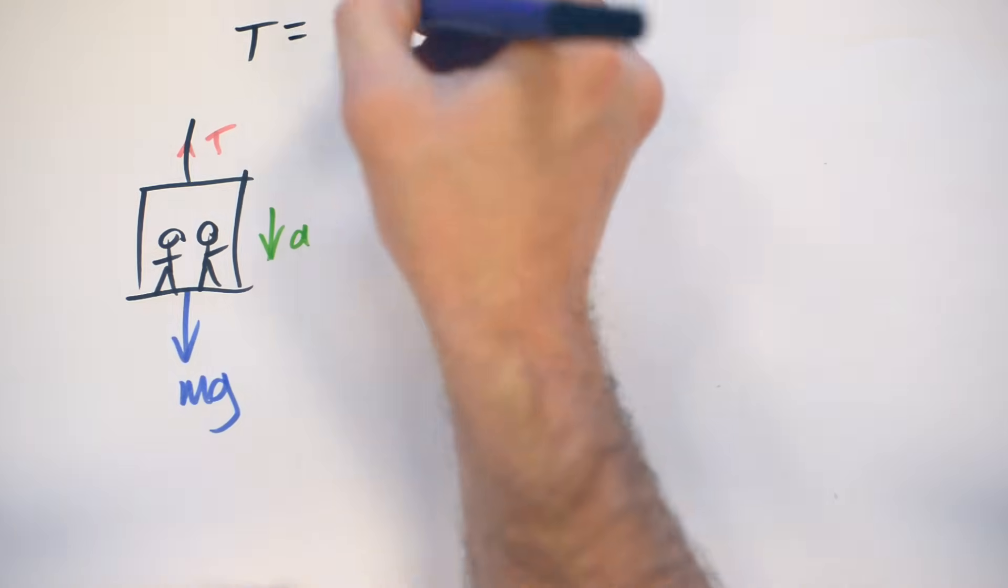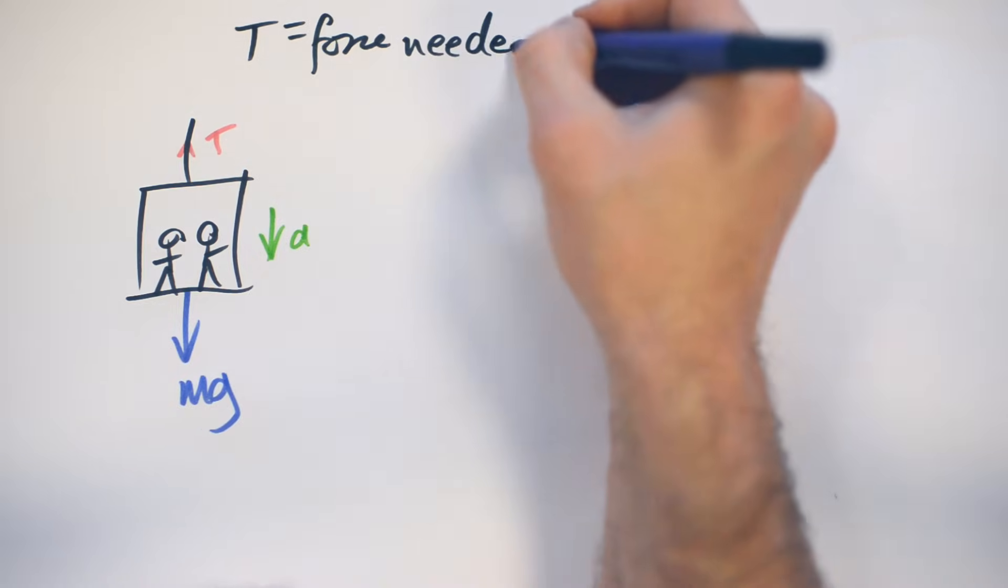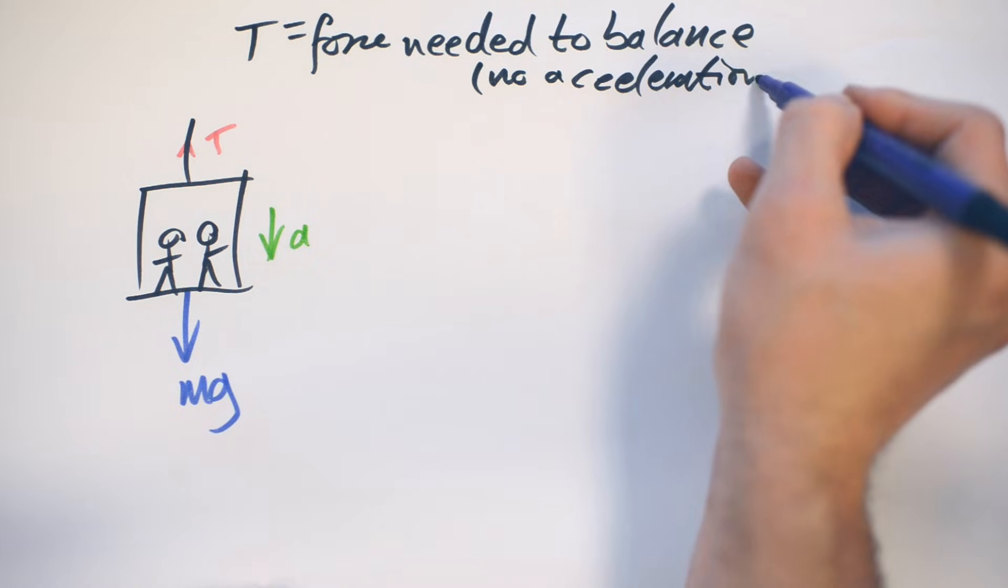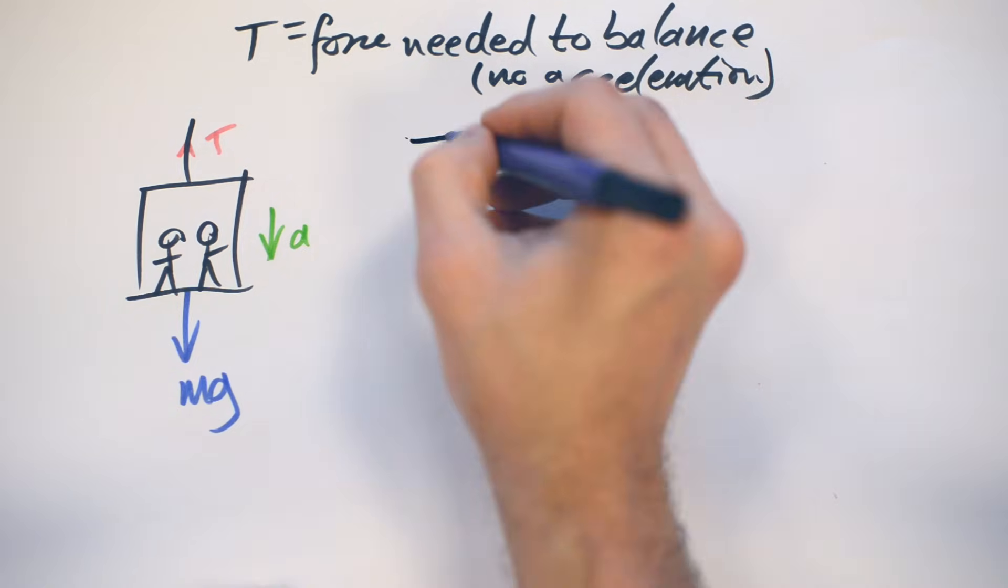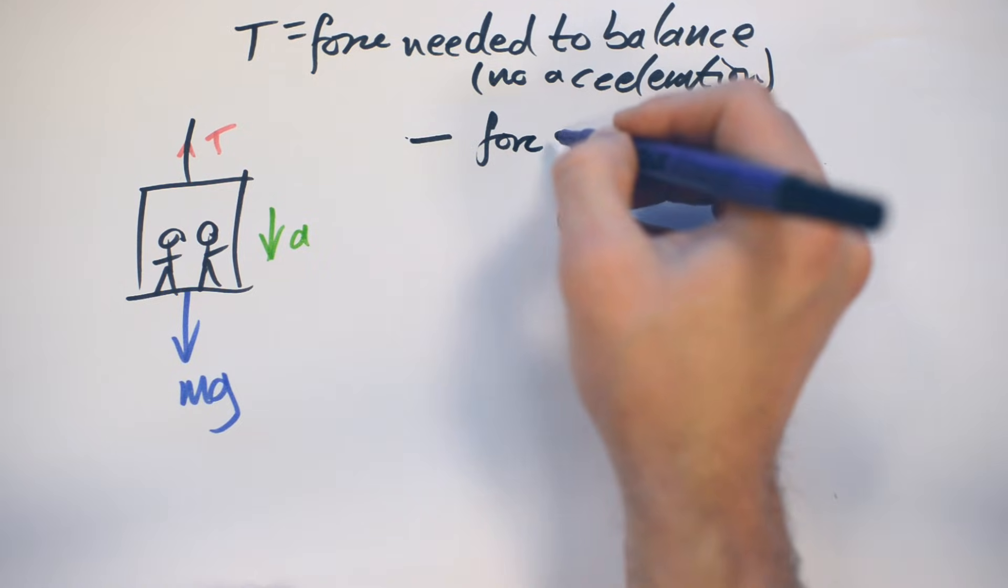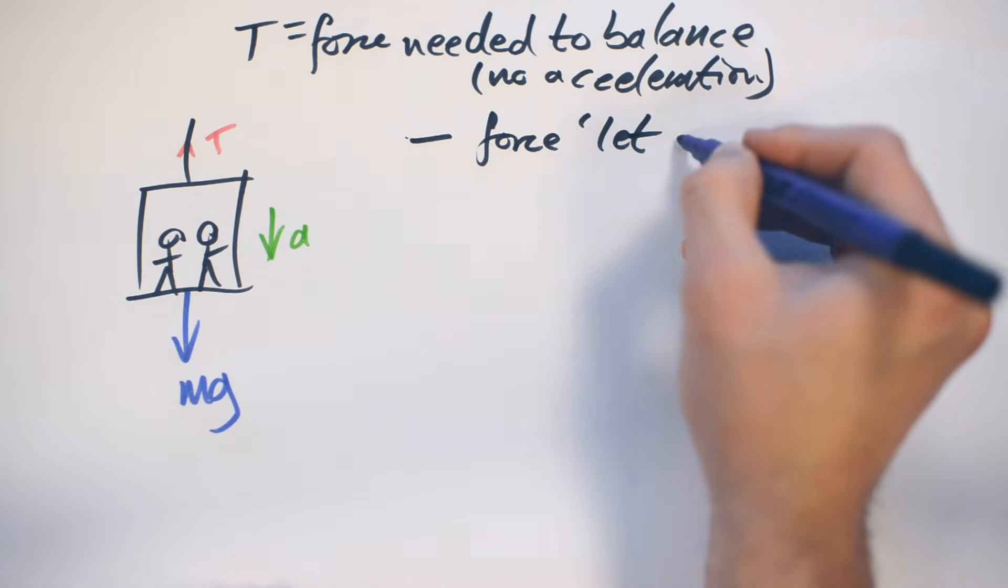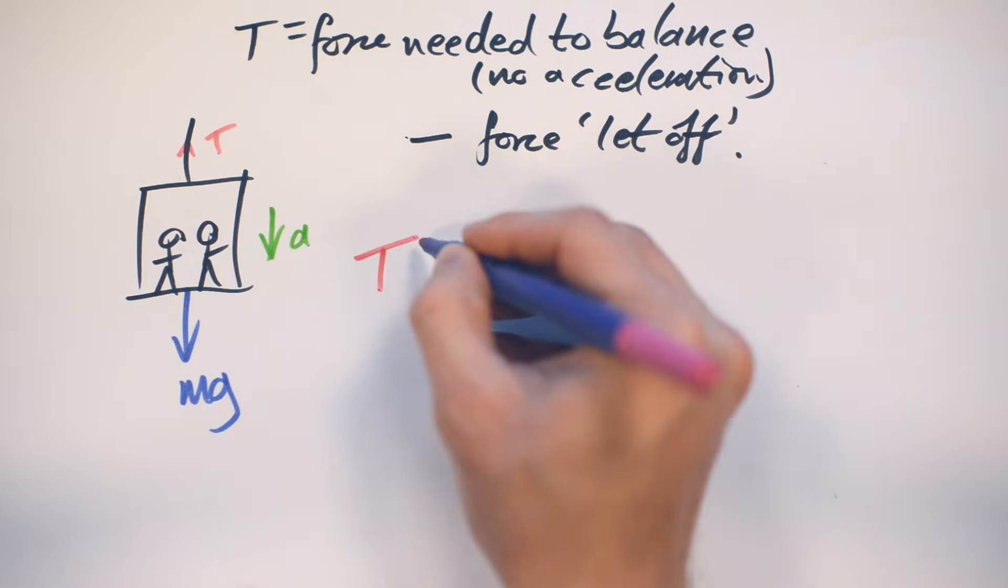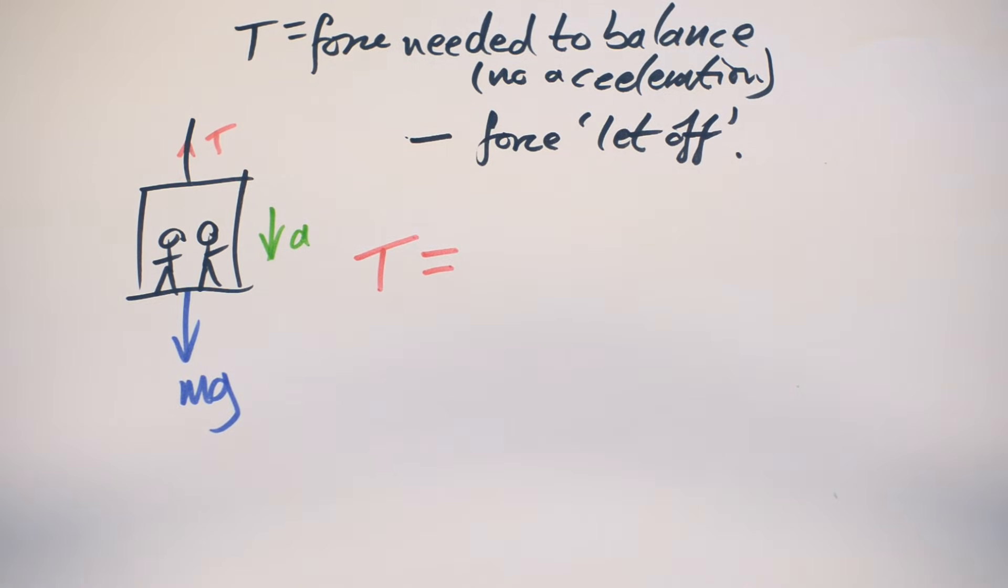So, again, we can say T equals force needed to balance, that's no acceleration, minus force let off. That's the best way I can put it. So, as per usual, T equals Mg.